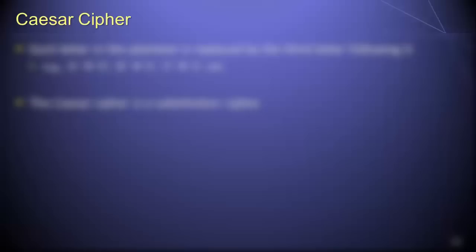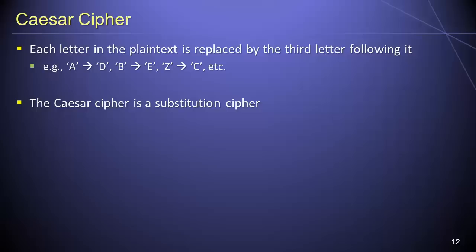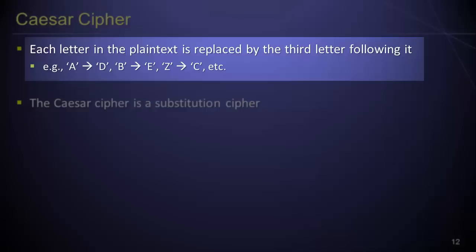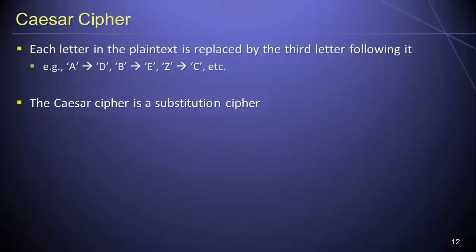The Caesar cipher is a simple rule-based cipher which, according to Suetonius, was used by Julius Caesar to keep important messages secret while in transit. The Caesar cipher employs a simple letter-shifting rule: each letter in the plaintext is replaced by the third letter following it. The letter A thus becomes D, B becomes E, and so forth. Using the Caesar cipher, the plaintext name Dan (D-A-N) would become the letters G-D-Q. Note that the Caesar cipher is a substitution cipher.